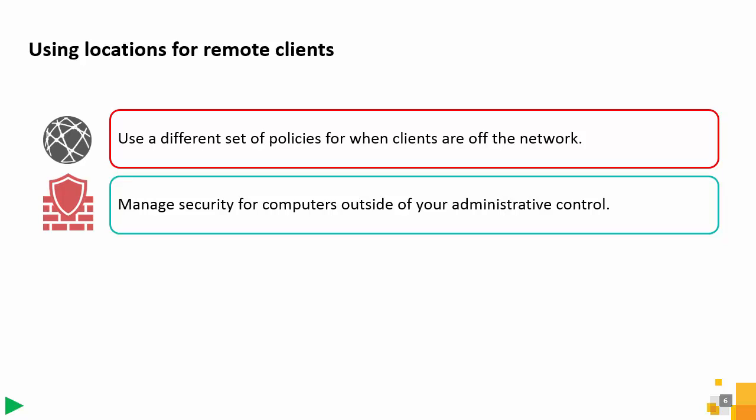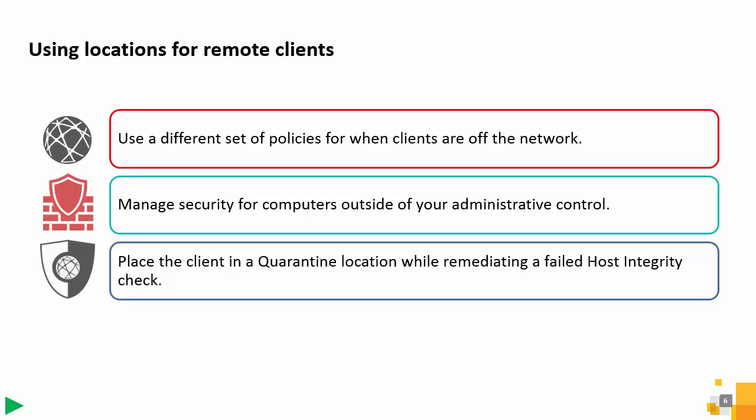For example, your organization may allow customers, contractors, vendors, or business partners to have limited access to your network. Employees may connect to your network using personal computers, and you may need to manage these clients differently. You can also place a client in a quarantine location while remediating a failed host integrity check. The client automatically switches to the quarantine location, which uses the quarantine policies. Quarantine policies are protection policies that are more restrictive. For example, you may use a quarantine firewall policy that blocks a computer's access to the internet.